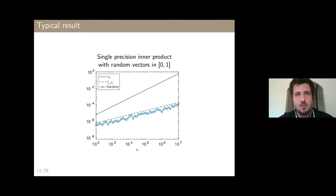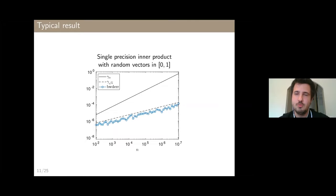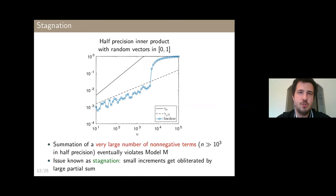Going back to the experiments: for single precision inner products with vectors in [0,1], our probabilistic bound gamma_{lambda * sqrt(N)} with lambda = 1 is sharp — that's the most typical result. But if we switch to half precision, the gamma * sqrt(N) bound is true for small n, and at some point it stops being true and the error explodes, as we saw.